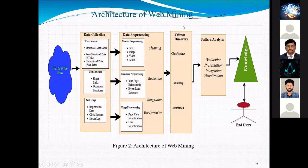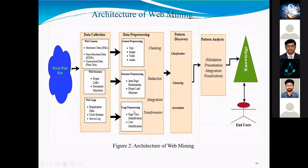The architecture of web mining consists of: data collection, data pre-processing, pattern discovery, and pattern analysis. In data collection it handles web content such as search data, semi-structured data like HTML, plain text, and hyperlinks or document structure. In pre-processing, it handles content pre-processing like text, image, video, audio, interface relationships, hyperlink structure, page view identification, and user identification.